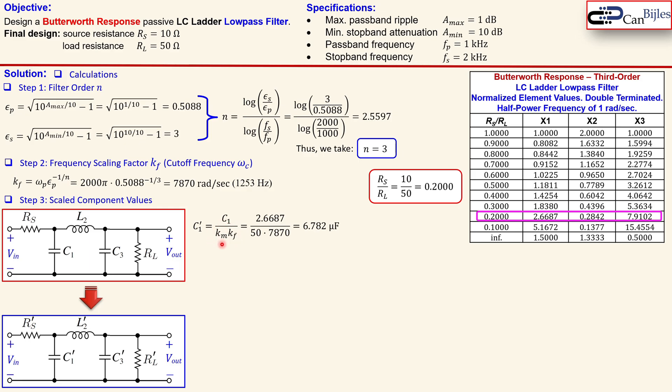Now what is km? We need to go from the 1 ohm, because it is normalized to a load resistor here, so 1 ohm to 50 ohm. So that means km, the magnitude scaling factor for the circuit, is 50, and the kf, which is the frequency scaling factor, is 7870. So that means we just use this coefficient c1 over 50 times 7870, so it will give us this capacitor value.